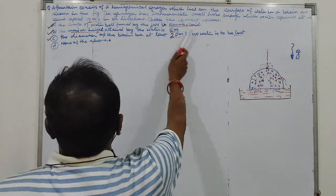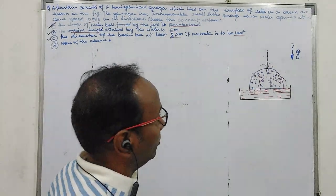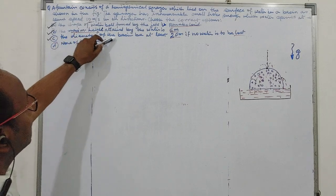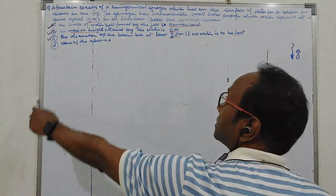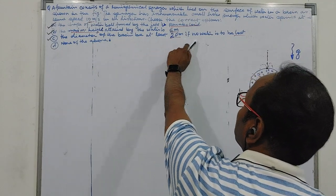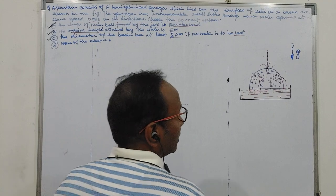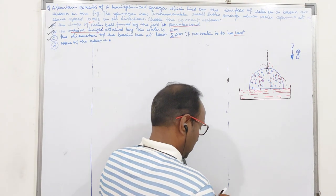So choose the correct options: the shape of water bell formed by the jets is paraboloid, that is one thing. B is the maximum height attained by the water is 5 meter. C is the diameter of the basin be at least 20 meter if no water is to be lost, or none of the above. So this is your basin diameter, this one.